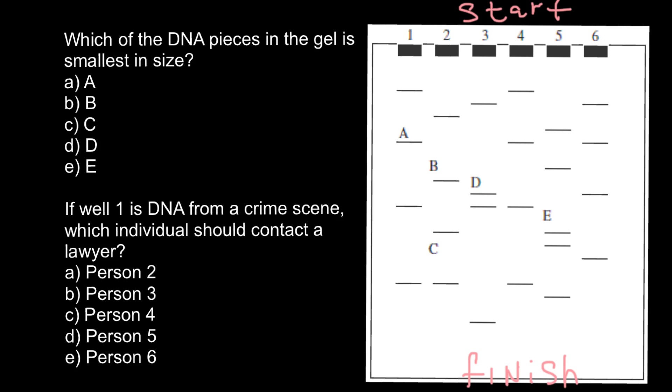A fragment that is small would travel faster. So the first question is: which of the DNA pieces in the gel is smallest in size? By the way, DNA is negatively charged. This side of the gel would be positively charged, and negatively charged DNA would travel in this direction, and here we apply negative charge.